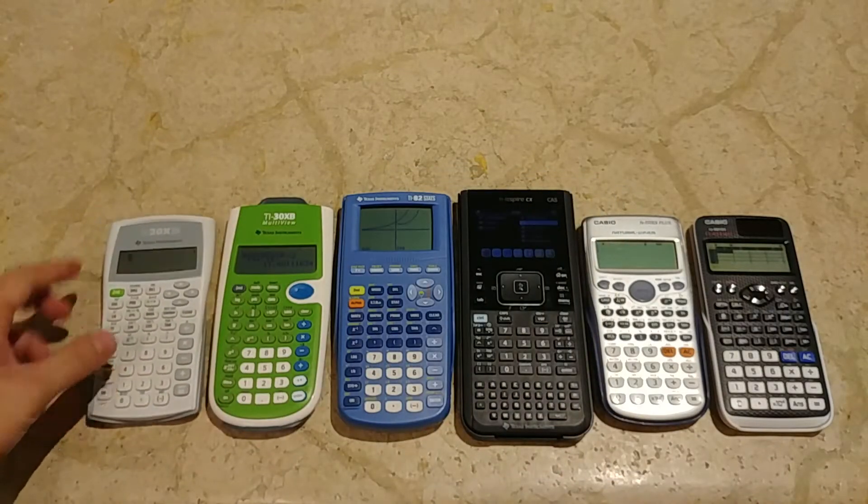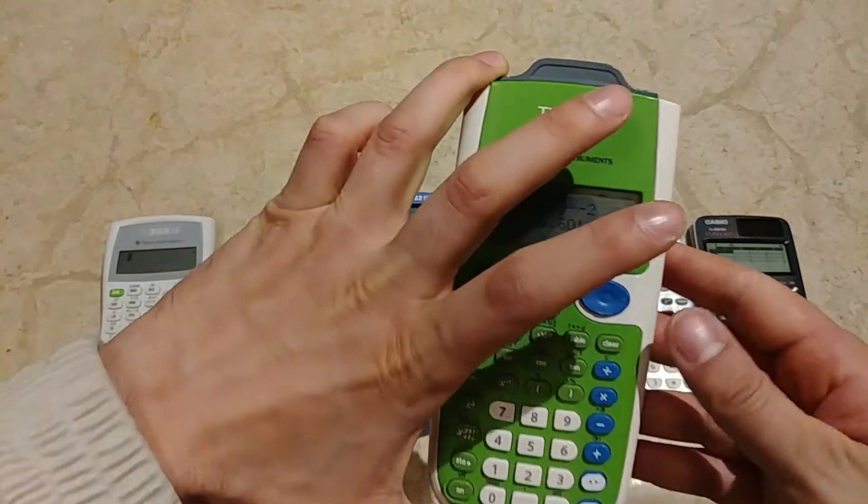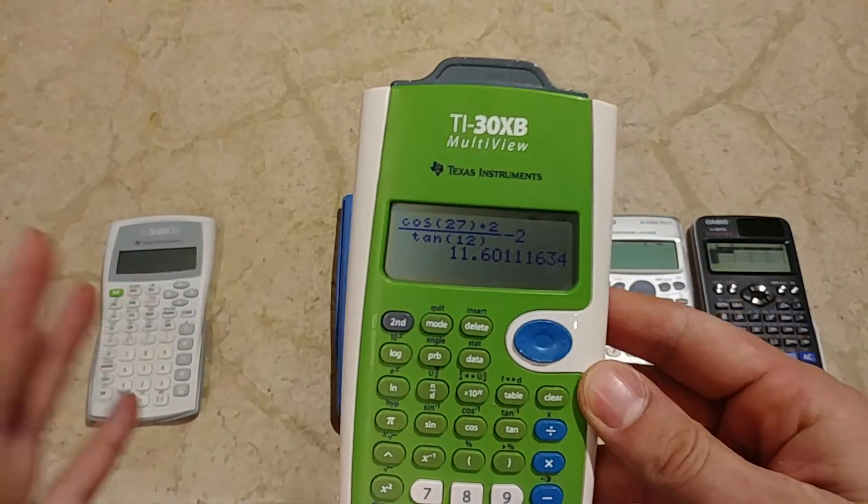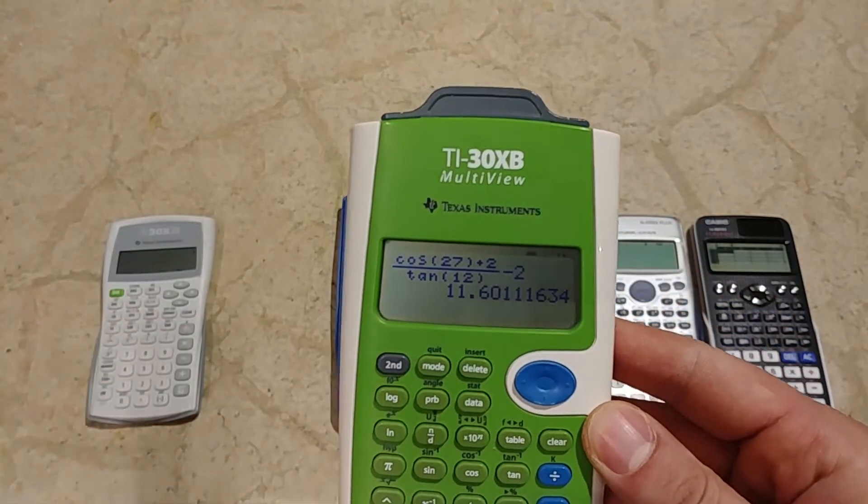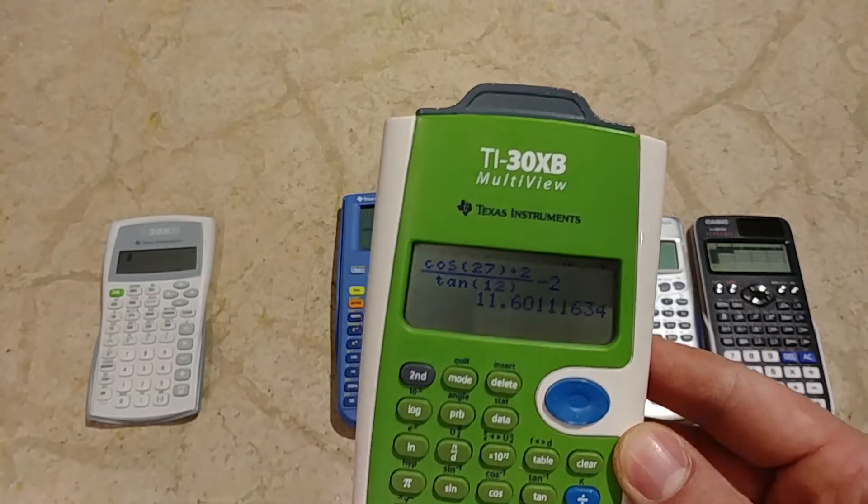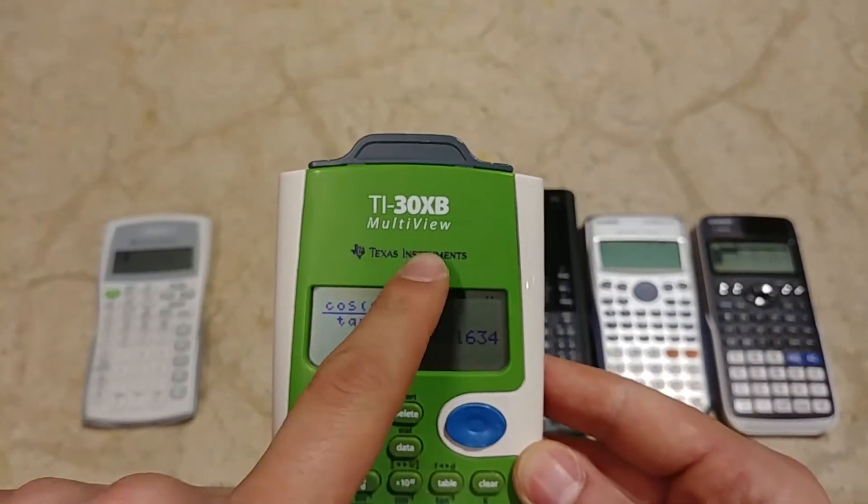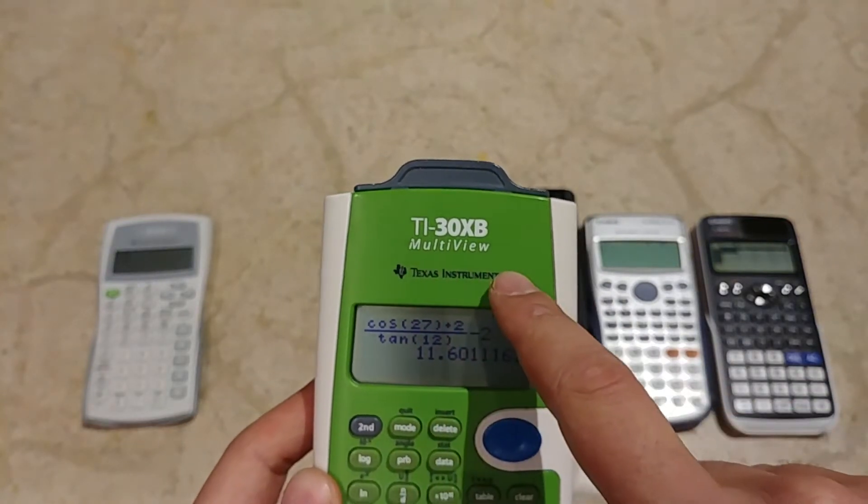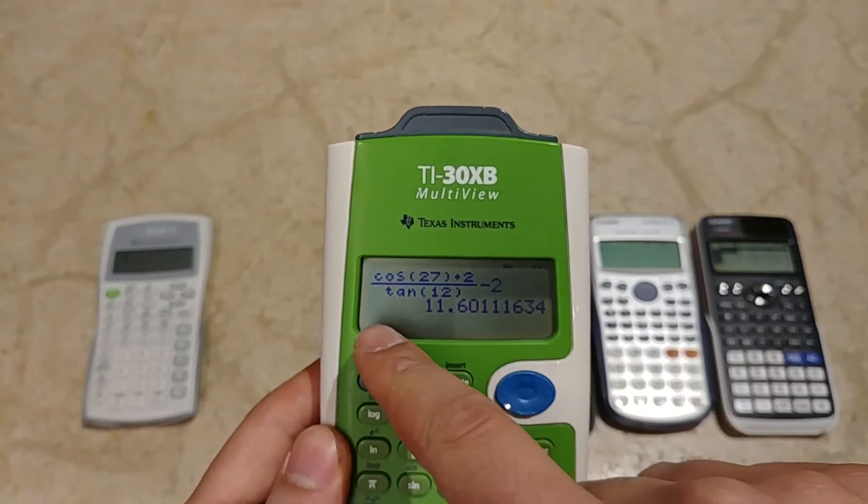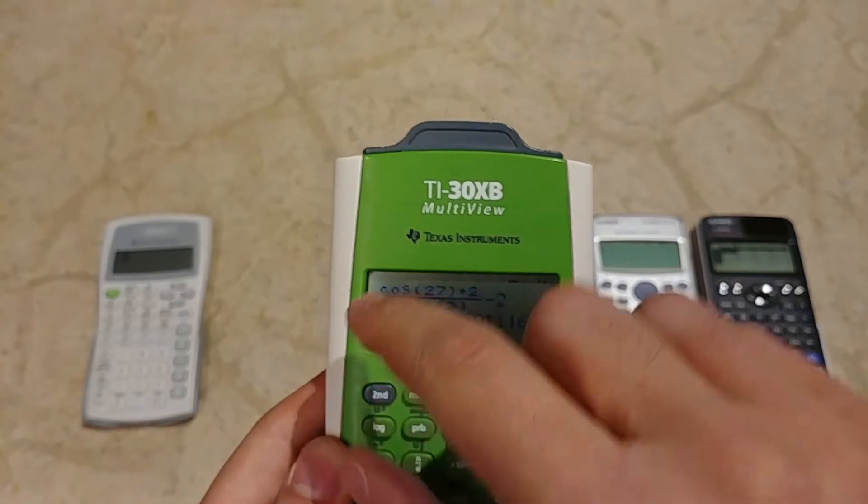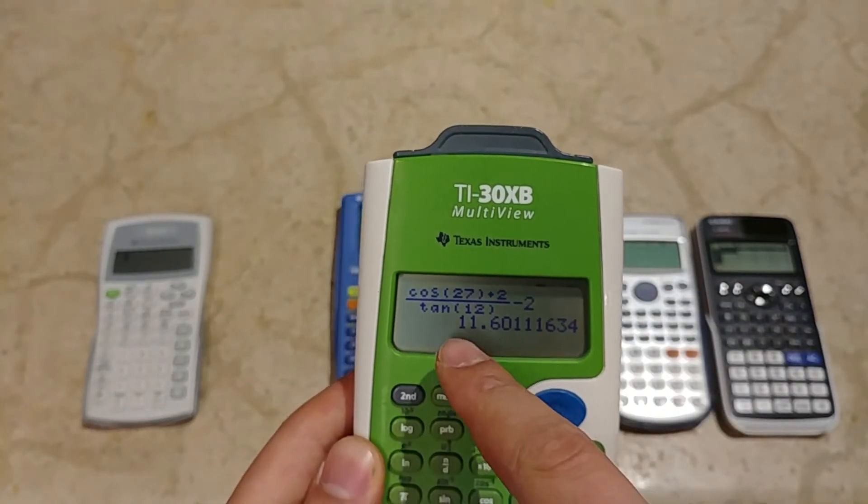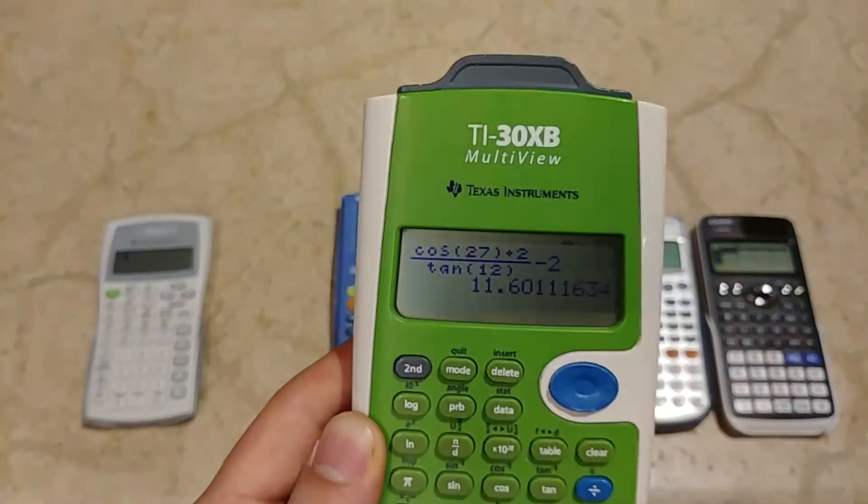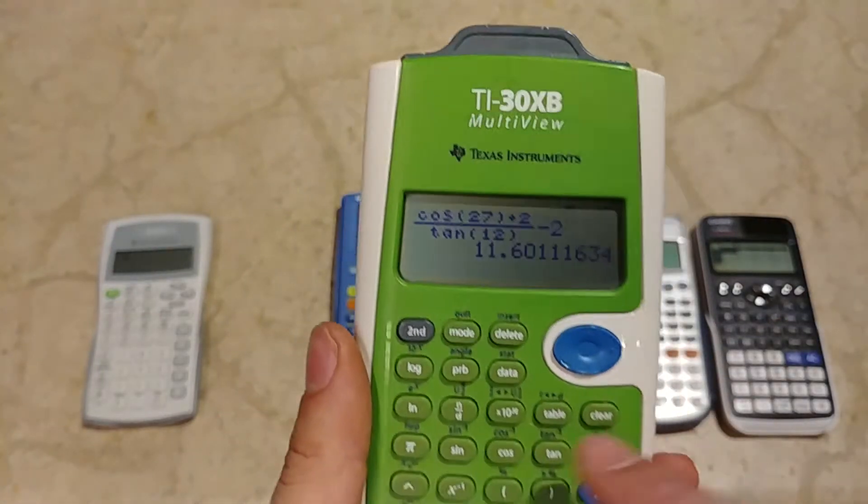Now let's go to this TI-30XB. This is a more complex but also useful calculator because it has a natural display. Natural display is for Casio, for TI it's multi-view display. You can see that I view the function in a natural way, for example, this sine I can show as I write on my notebook.